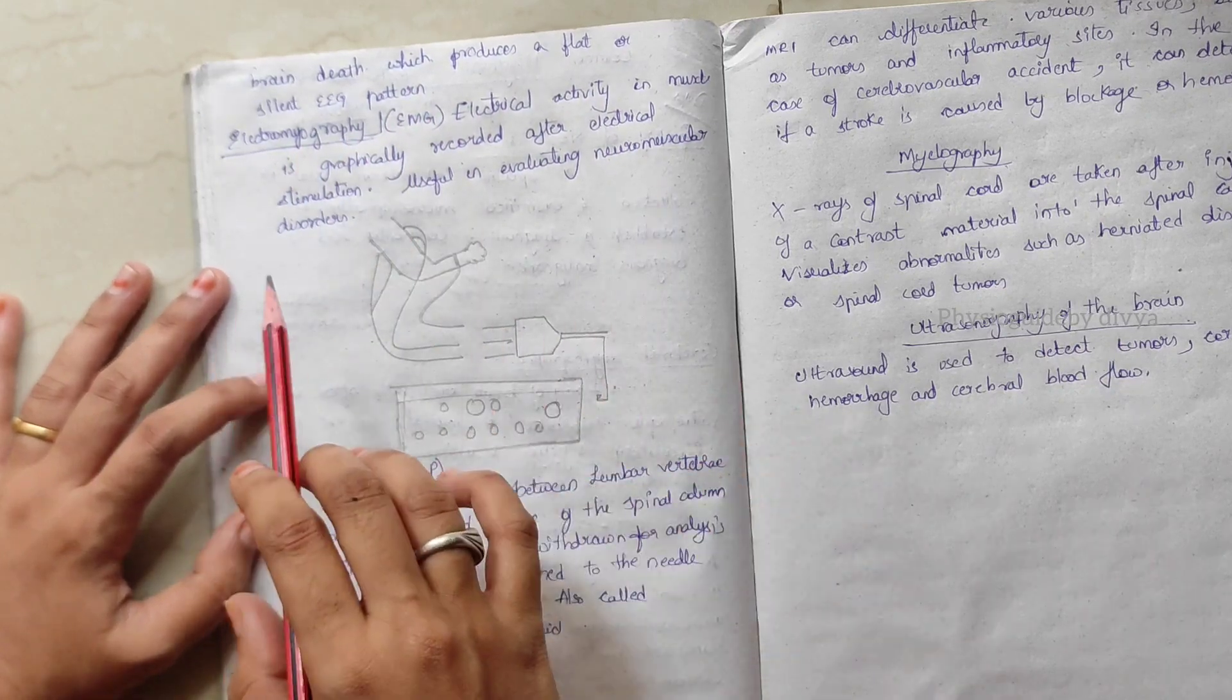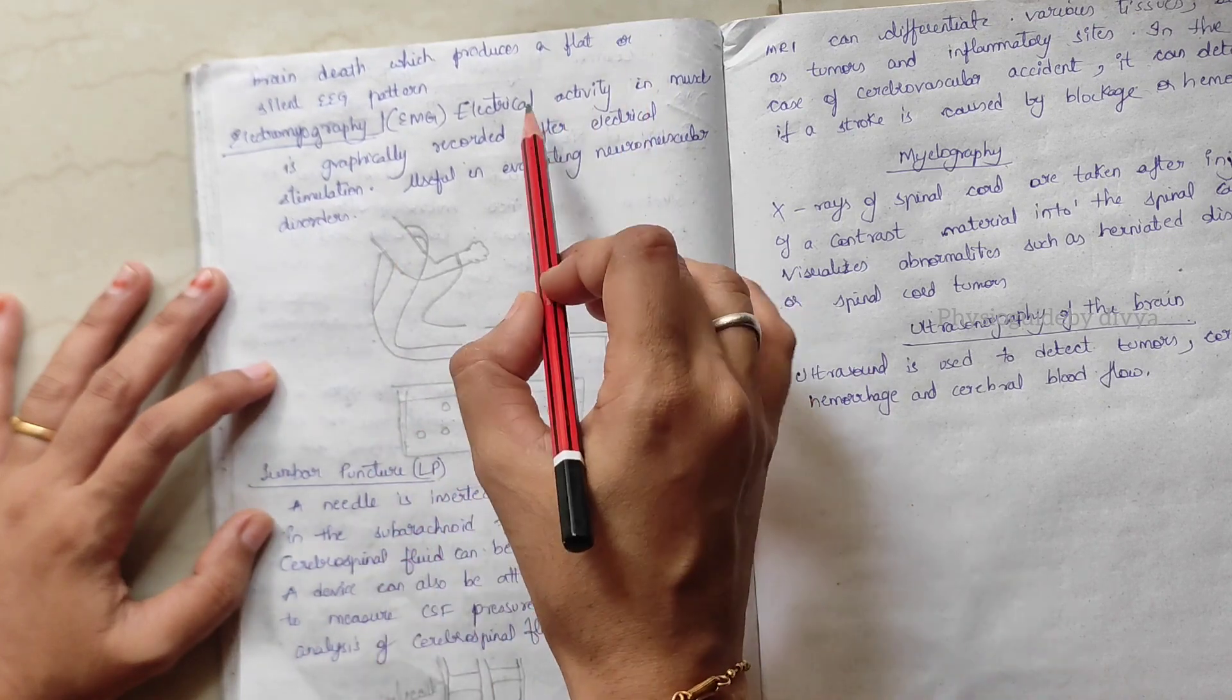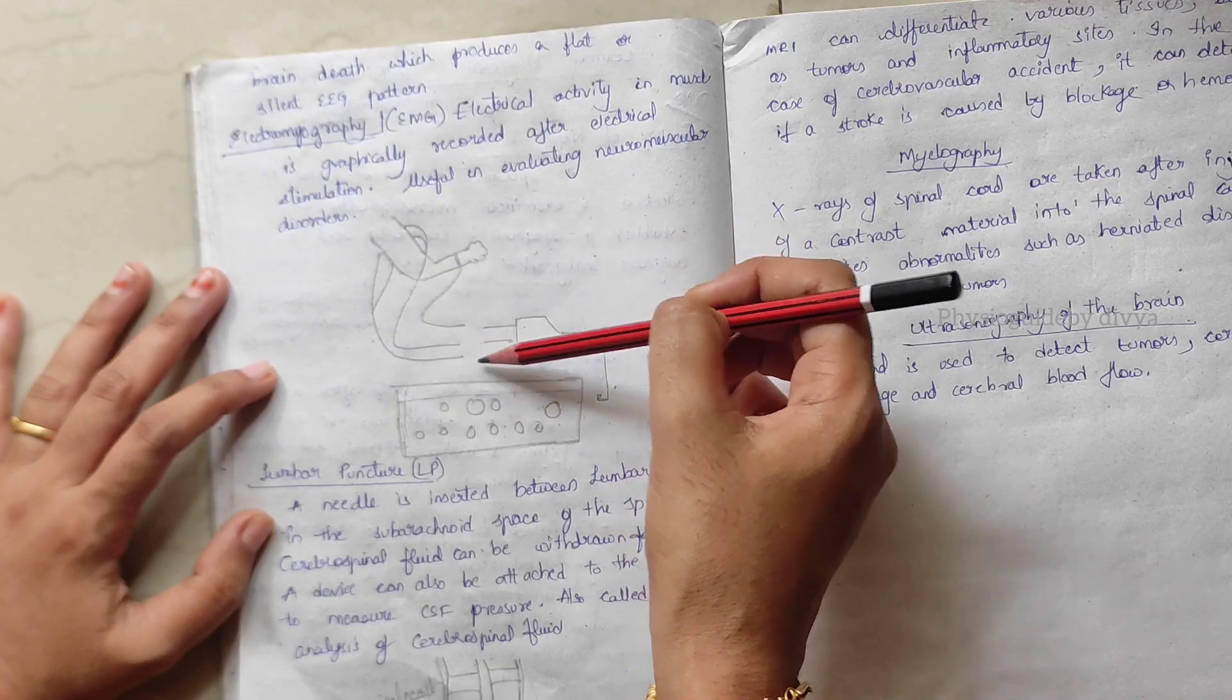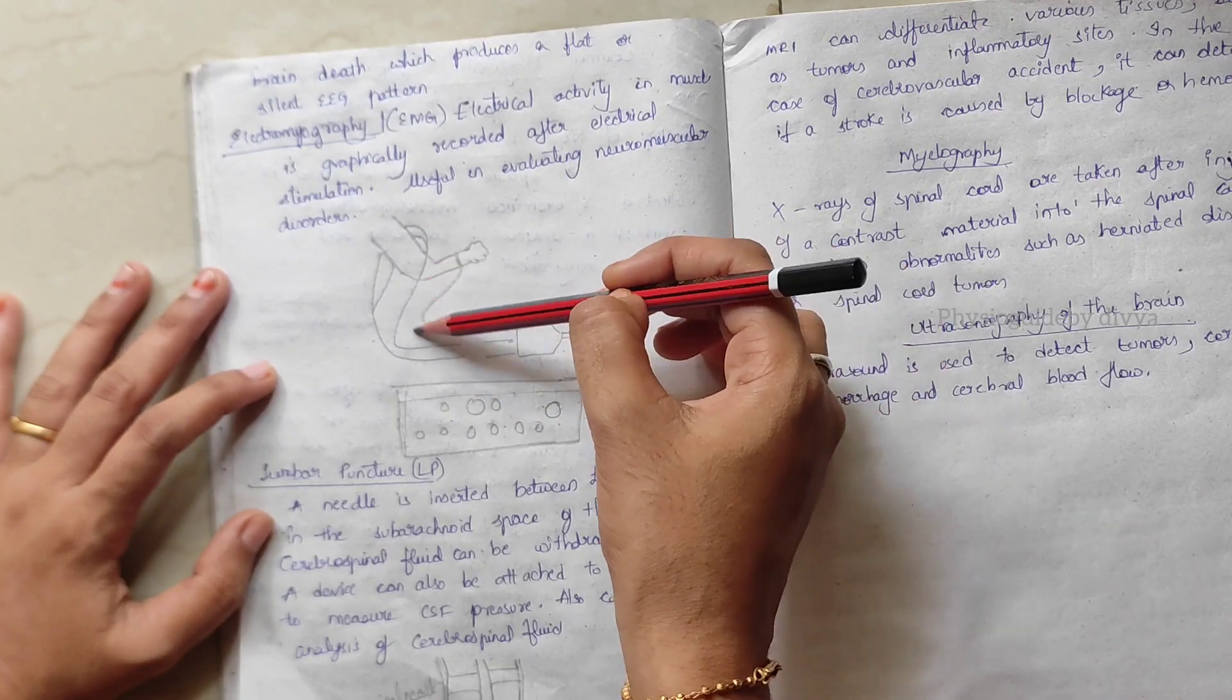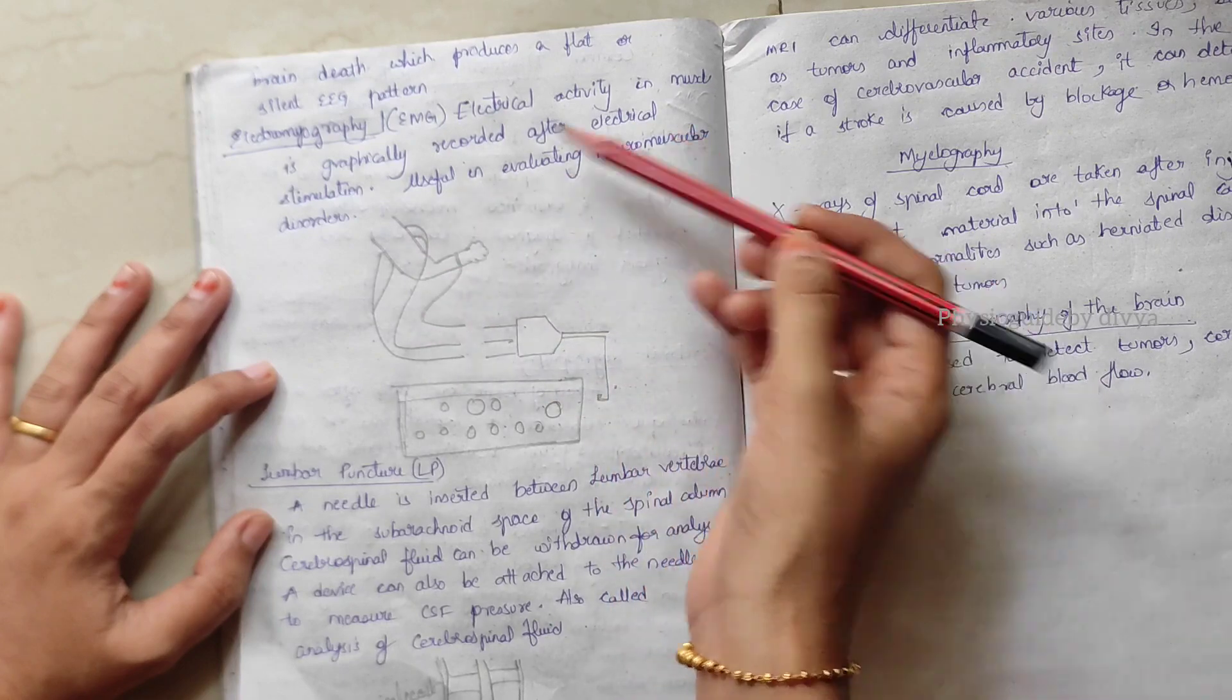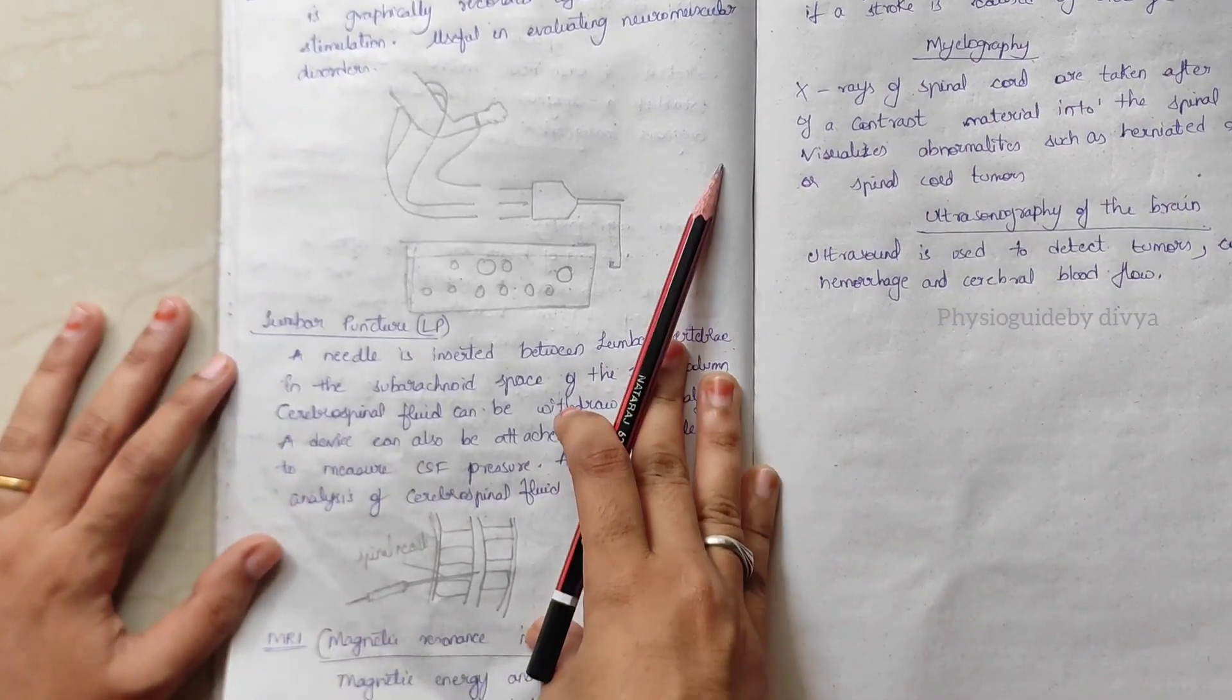Electromyography, EMG. With the help of the muscle we test this. Electrical activity in muscle is graphically recorded after electrical stimulation. This is useful in evaluating neuromuscular diseases and disorders.